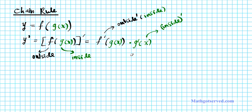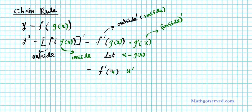This notation looks very confusing — a lot of students confuse the outer function and the inner function. So to keep our work nice and clean, most textbooks make use of a substitution called the u-substitution. We let the inner function g of x be u, giving us the formula: f prime of u times u prime — derivative of the outside evaluated at the inner function times the derivative of the inside function.